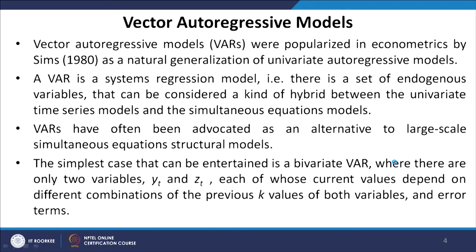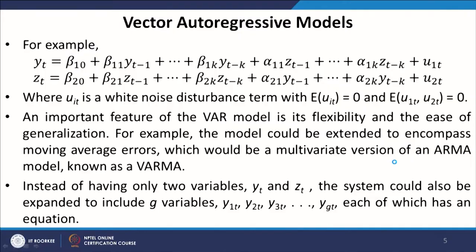The simplest case is a bivariate VAR, where there are only two variables yt and zt, each of whose current values depend on different combinations of the previous k values of both variables and error terms. We write yt as a function of a constant term, k lagged values of y itself, and k lagged values of zt.